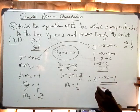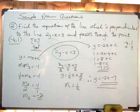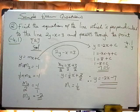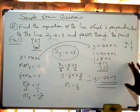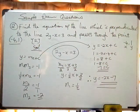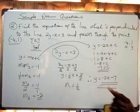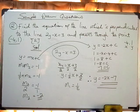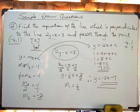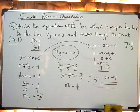Therefore y equals negative 2x minus 7. This is the equation of the line. If you do it like this you get your 2 marks — remember this is Paper 1. Let us go to the next question, which will be in the next video.